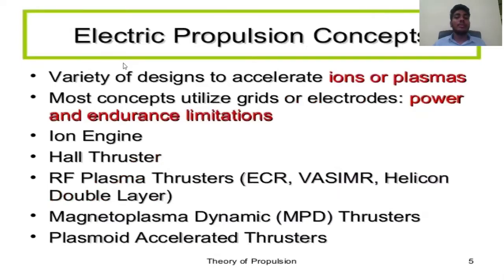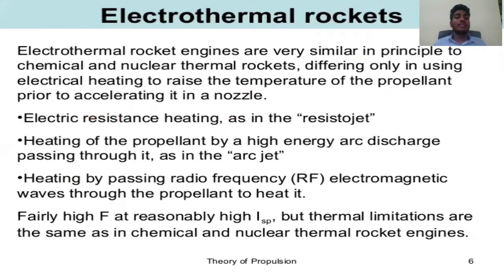Electric propulsion concept: a variety of engines accelerate ions or plasmas. Most concepts utilize grids or electrodes. Types include ion engines, Hall thrusters, RF plasma thrusters, ECR, VASIMR, silicon double layer, magnetoplasmadynamic (MPD) thrusters, and plasmoid or accelerated thrusters.